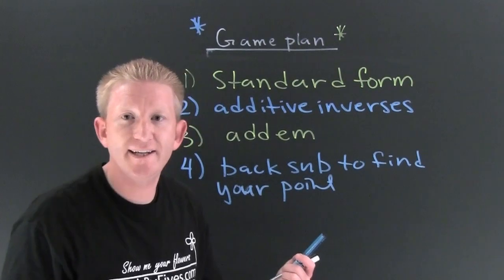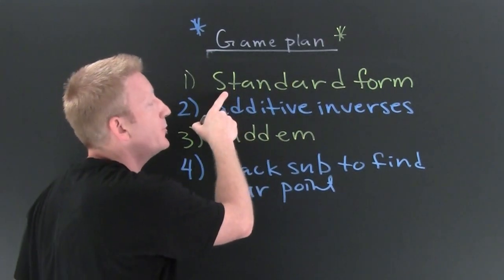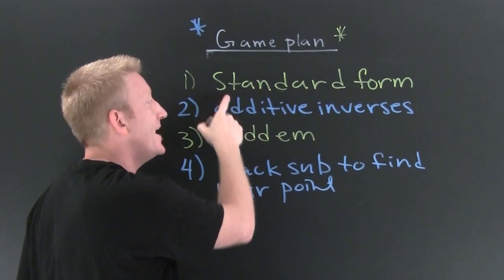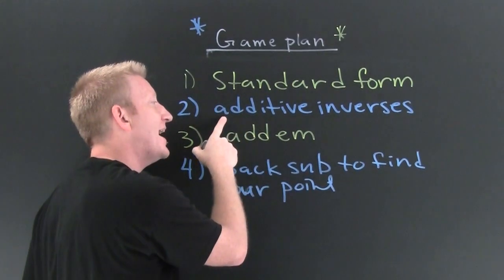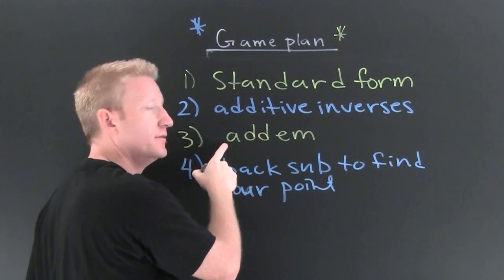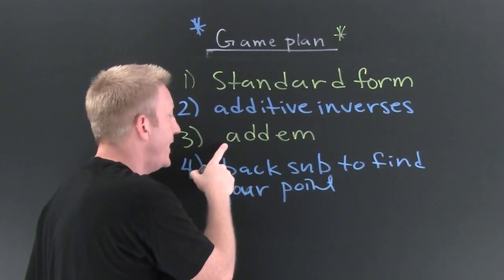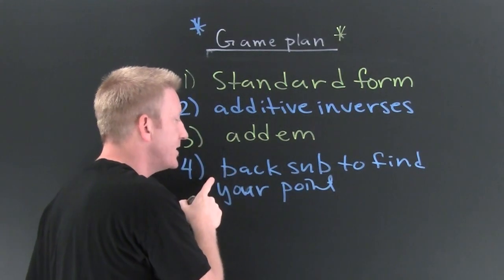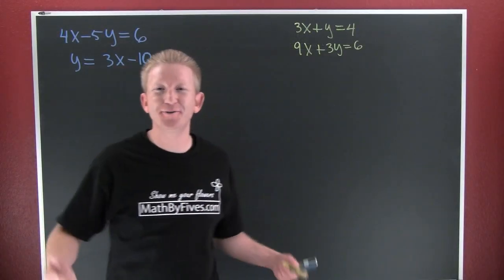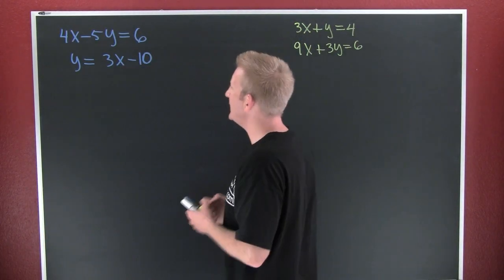We're going to need a game plan. First, we're going to get our two equations in standard form. Then, we're going to find additive inverses. Then, back substitute to find your points. Game plan set in place.